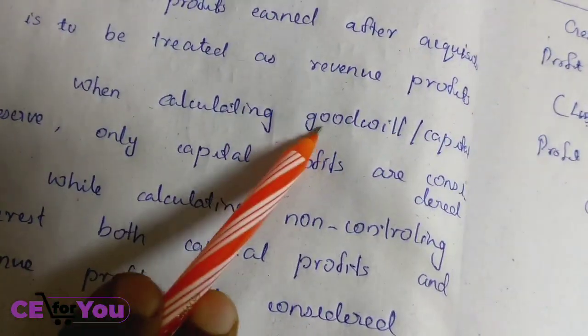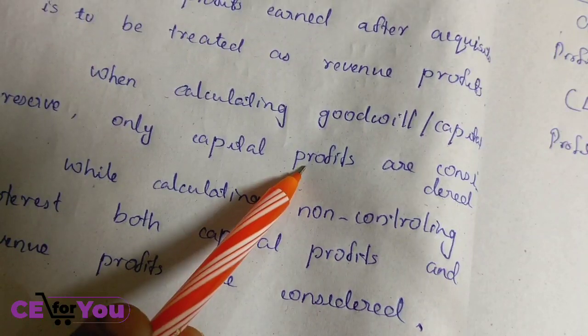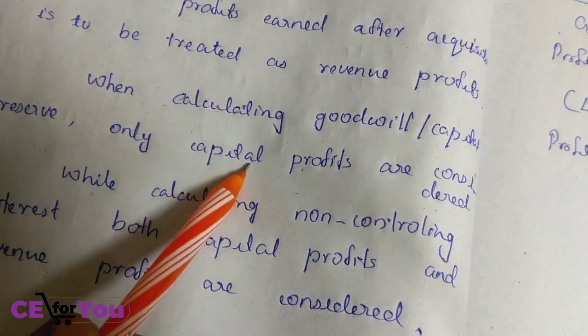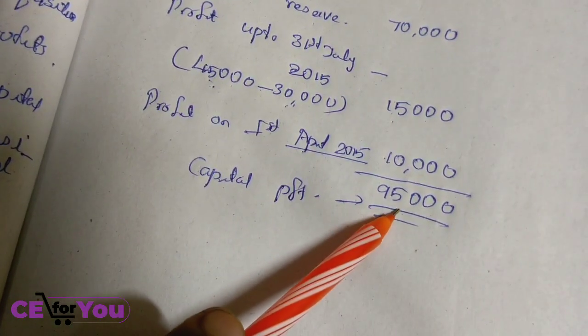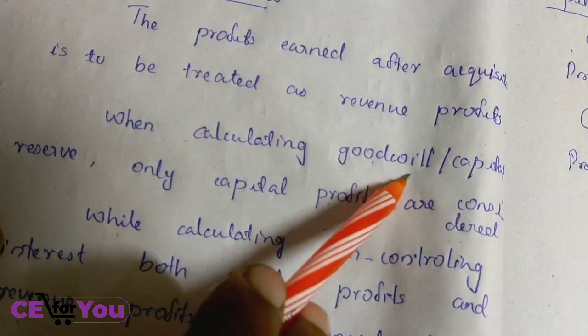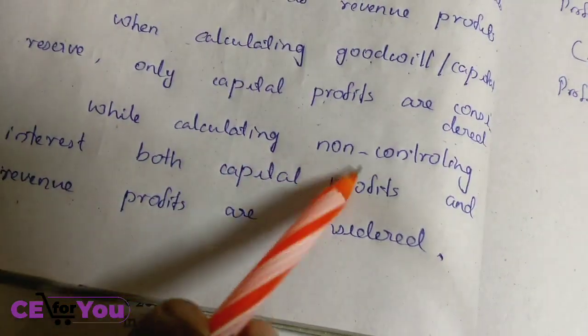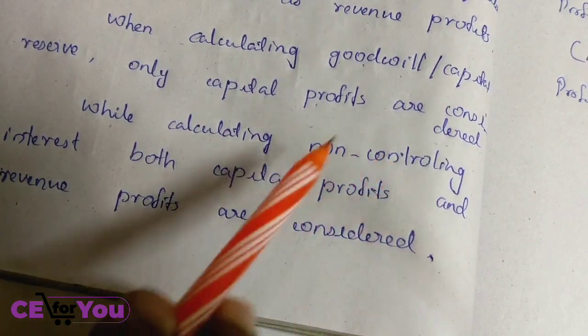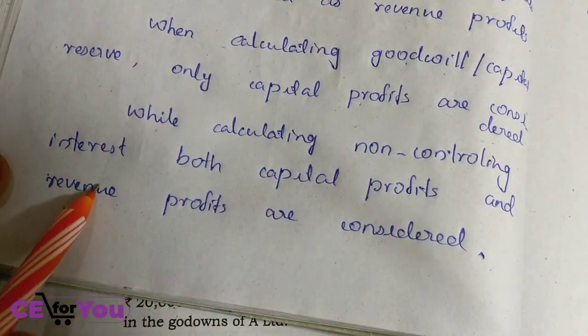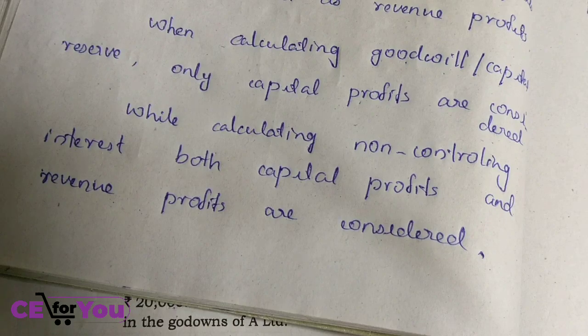The capital profit is included in the goodwill calculation. Capital profit is 95,000 and 75% is used for the goodwill calculation. In the non-controlling interest calculation, the capital profit is 25% and the revenue profit is 25% as well.